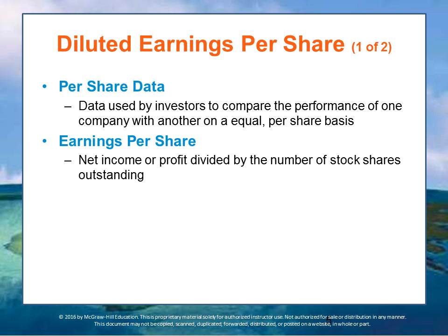Investors may use per share data to compare one company with another on an equal, per-share basis. Earnings per share is calculated by dividing net income by the number of shares of stock outstanding. This ratio is important because yearly changes in earnings per share, in combination with other economy-wide factors, determine a company's overall stock price.